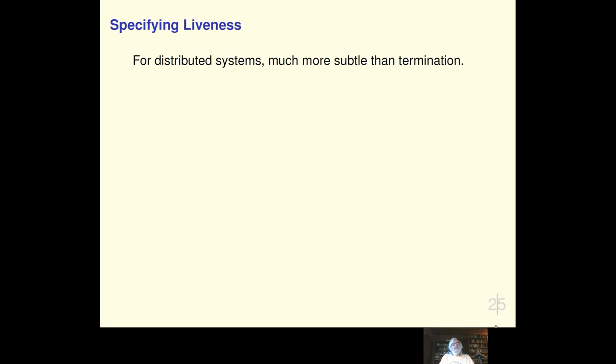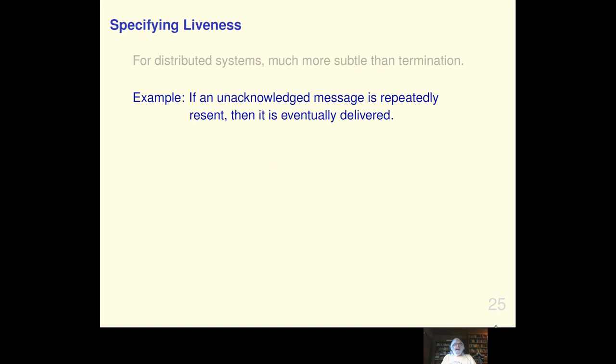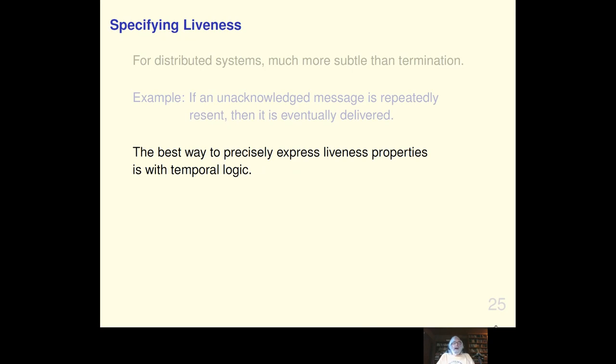Specifying liveness. Now, for distributed systems, that's much more subtle than termination. For example, if an unacknowledged message is repeatedly resent, then it is eventually delivered. These things are easy to express, and the best way to do it is with temporal logic. And, in fact, the TL in TLA stands for temporal logic. But some people can have difficulty with that because liveness is a very subtle thing, and people can get their heads wrapped around it with difficulty. But the difficulty is not due to TLA. It's due to the subtlety of liveness, and engineers are simply not used to checking it.